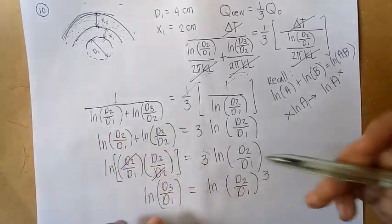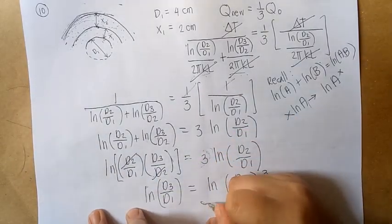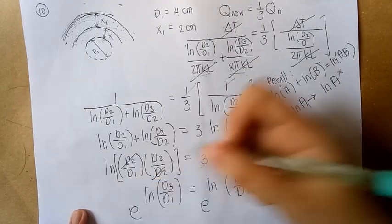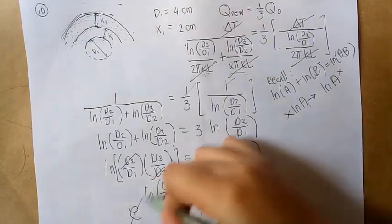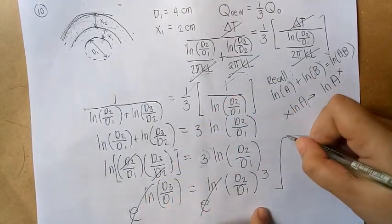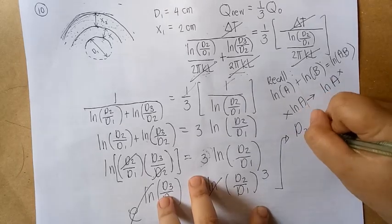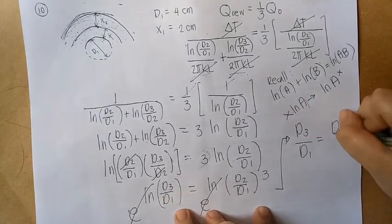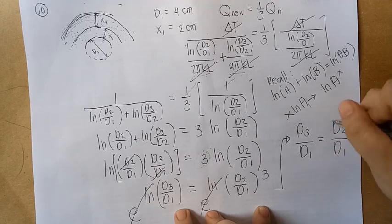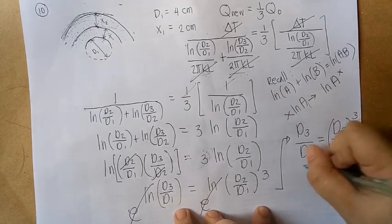Now, to remove the ln, we use E raised to both sides. The ln cancels. What remains is: D3/D1 equals (D2/D1) raised to 3.